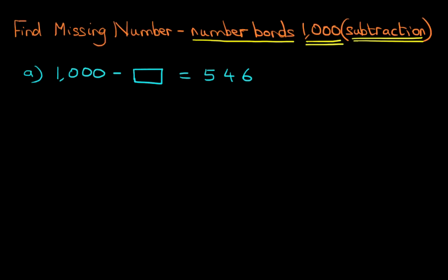Now in previous tutorials, what we did was we moved the missing number and we swapped it with the number on the right, and then we would subtract 546 from 1,000. We're not going to do that in this tutorial.